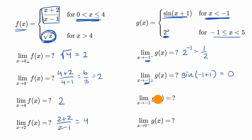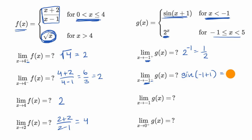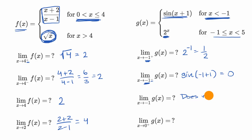Now what's the two-sided limit as x approaches negative one of g of x? We're approaching two different values as we approach from the right and from the left. If our one-sided limits aren't approaching the same value, then this limit does not exist.